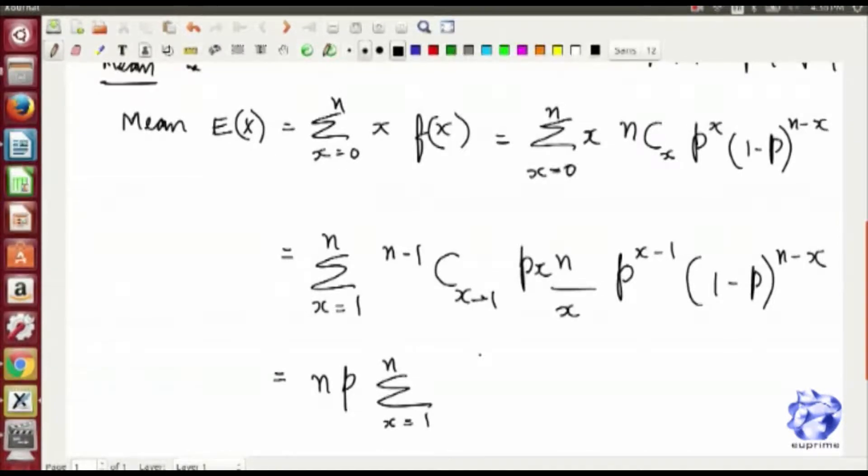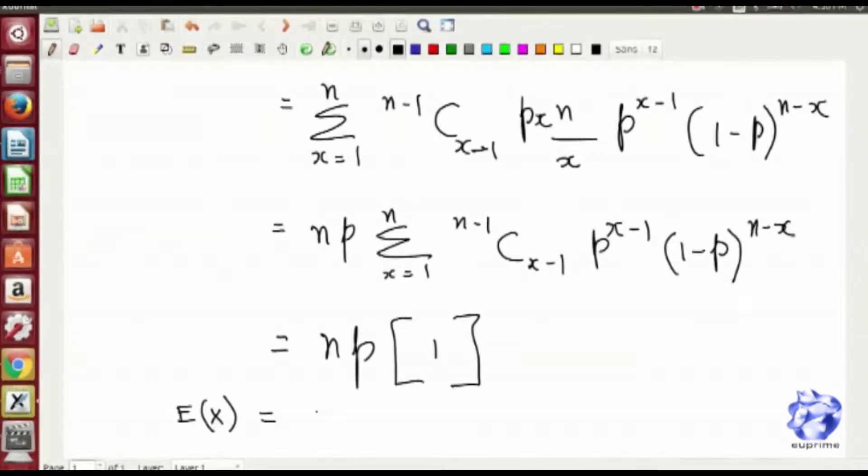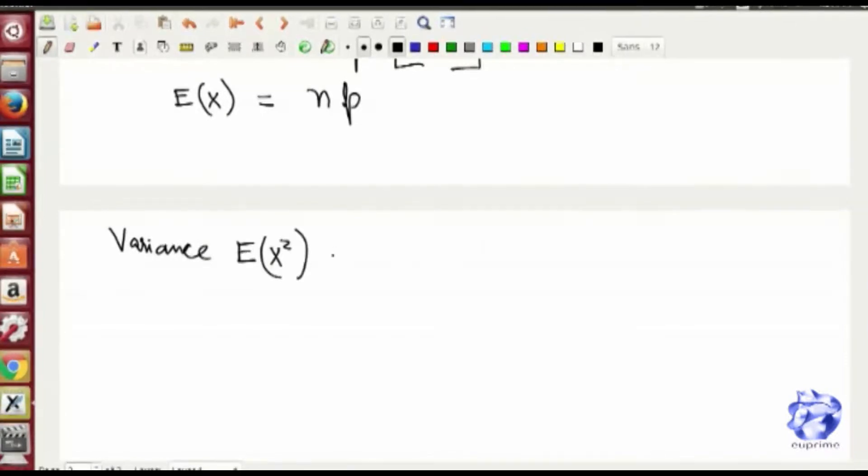Mean with expectation method is pretty much the same. The only difference in this case is the change in probability mass function. X equals 0 evaluates the whole term to be 0, so we take the summation from x equals 1.